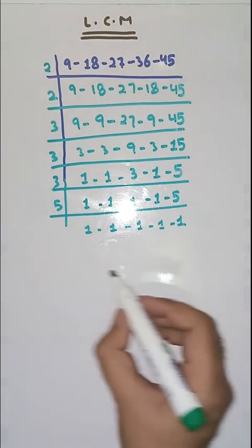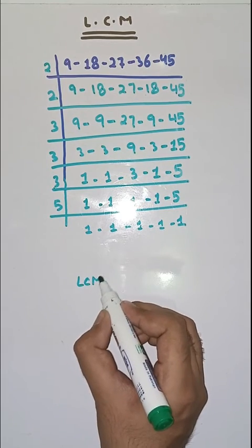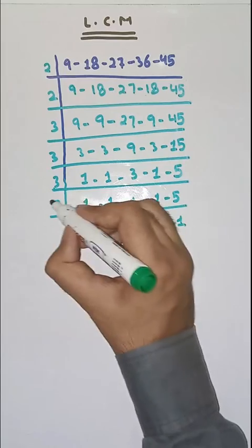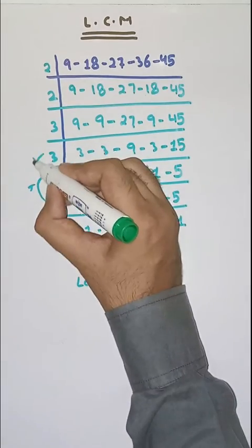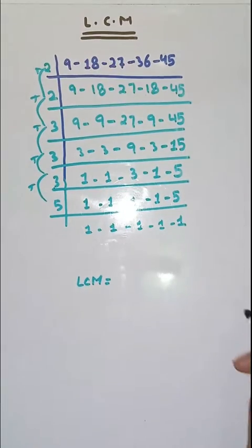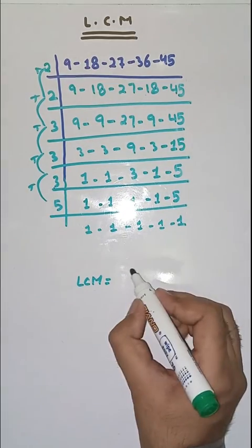So, LCM is equal to product of prime factors, which means 5 into 3 into 3 into 2 into 2, which is equal to 540.